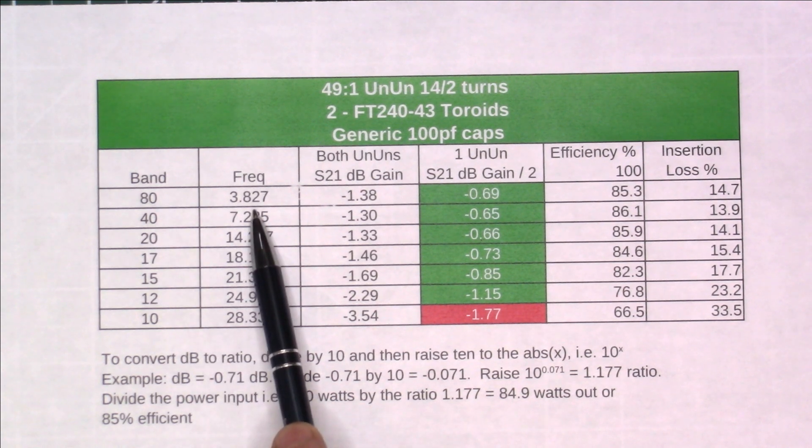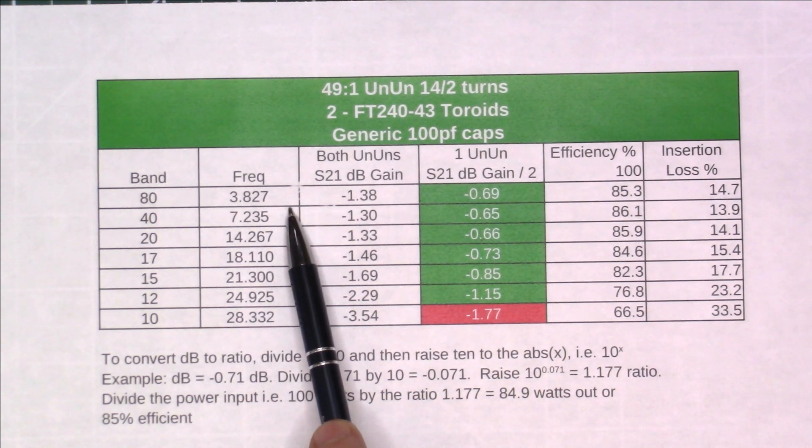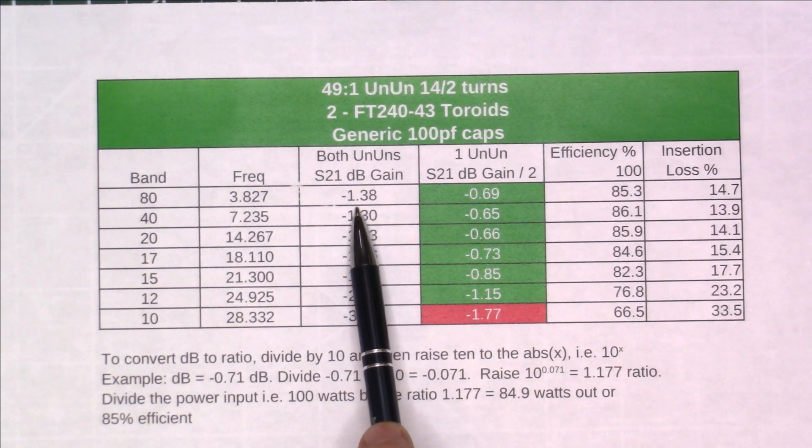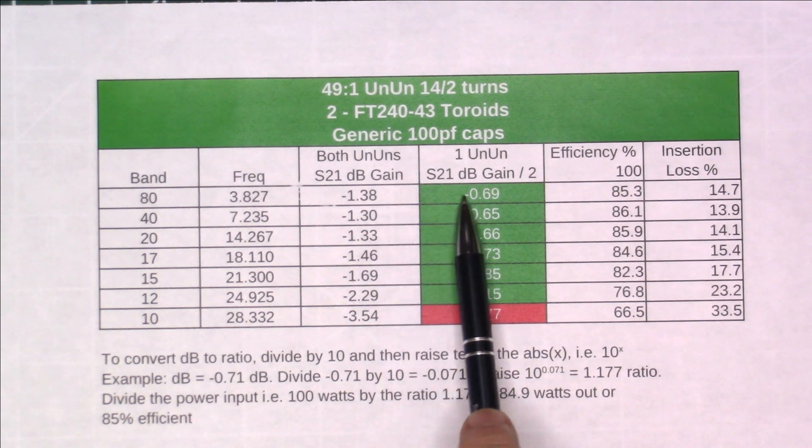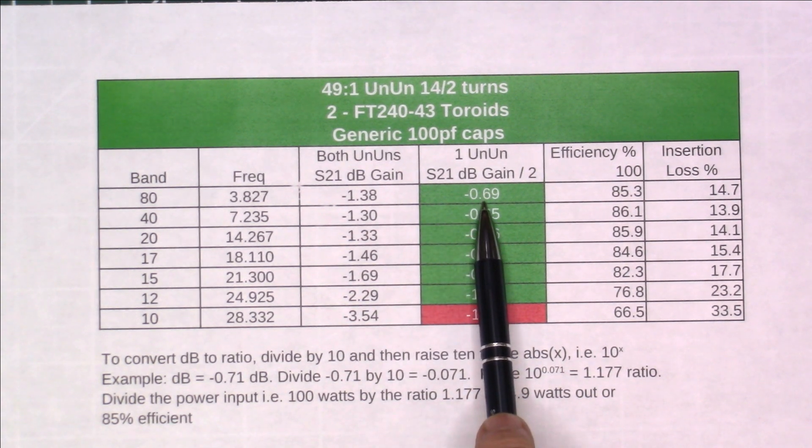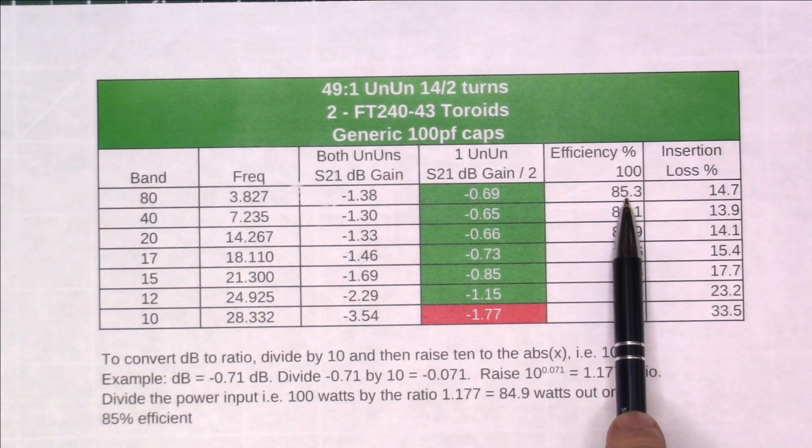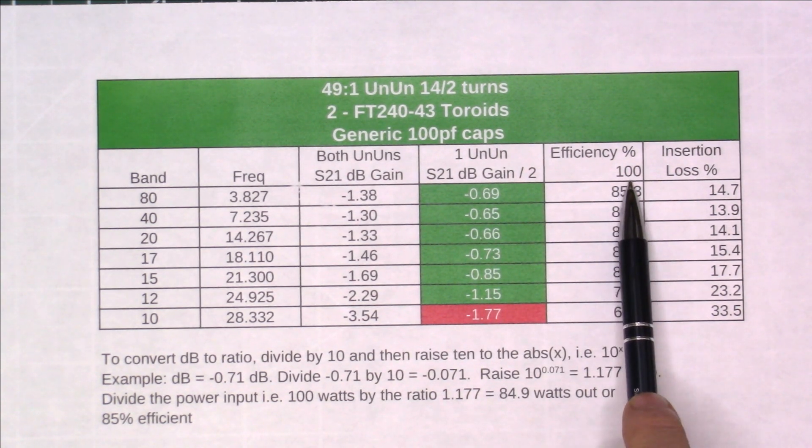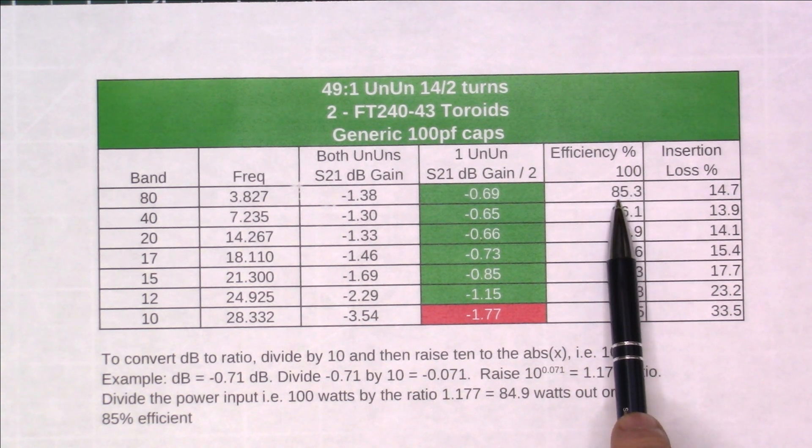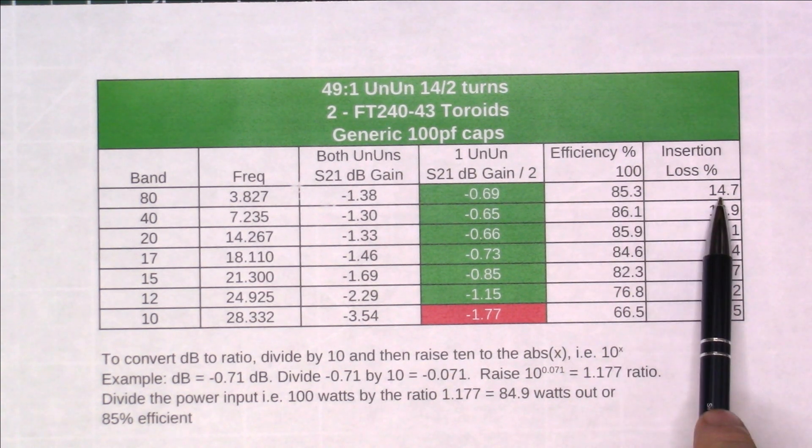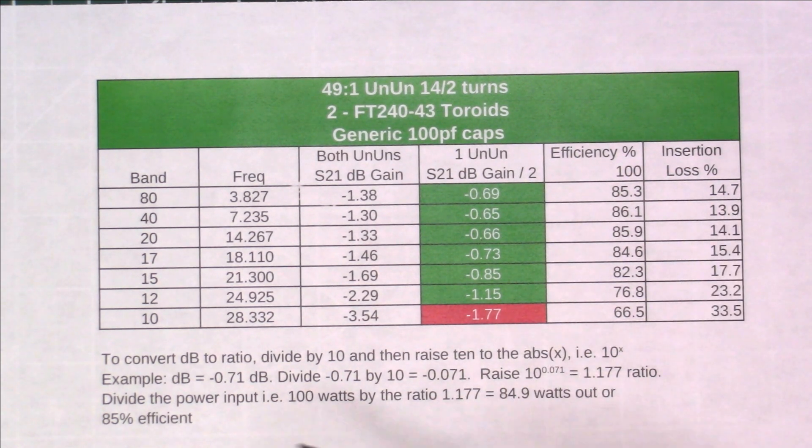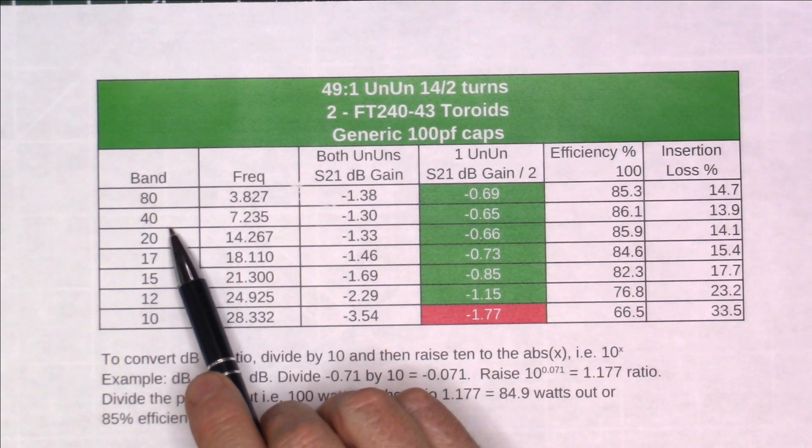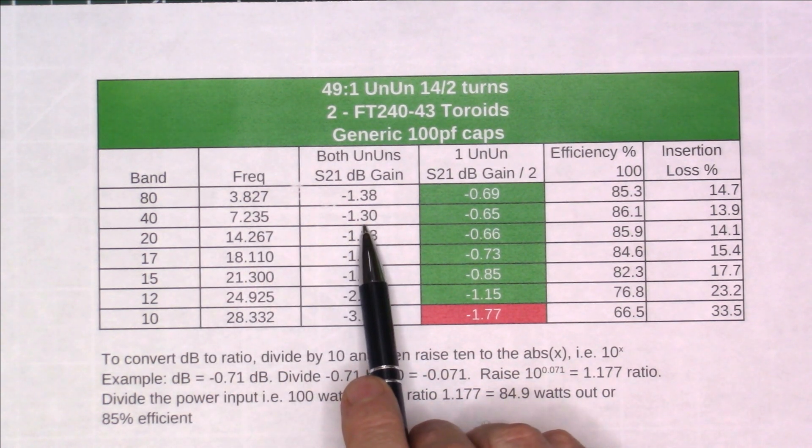For the 80 meter band at 3.827 megahertz, we had a loss of 1.38 through both of them. You divide that by 2, that comes out to 0.69. 0.69 equates to 85% efficiency. So for every 100 watts you put in, you get 85 watts out, for a loss of 14.7, you may as well say 15%.